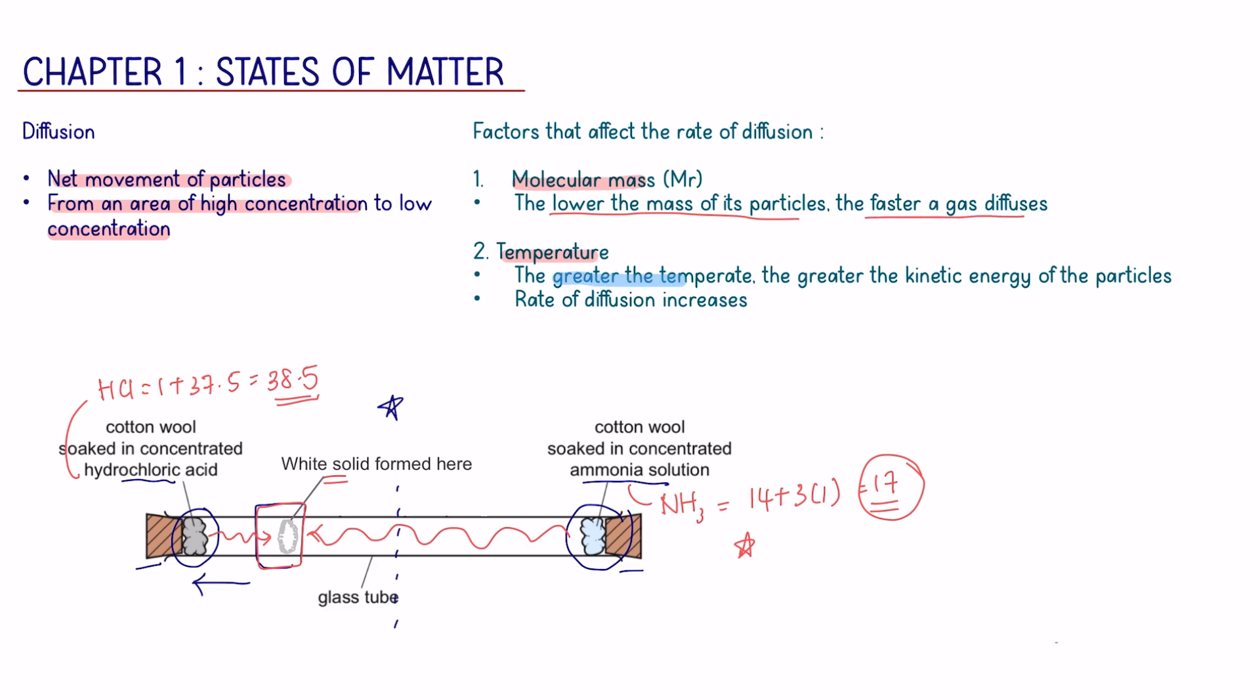As for temperature, the greater the temperature, the greater its kinetic energy of the particles that causes the rate of diffusion to increase, which means that it speeds up the rate of diffusion. However, it will not change the position of the white solid form. It will only cause the white solid to form faster as the particles have now diffused faster due to the greater kinetic energy.